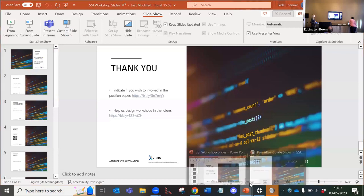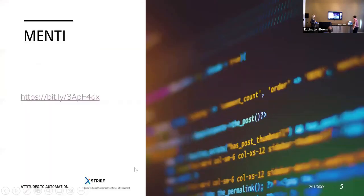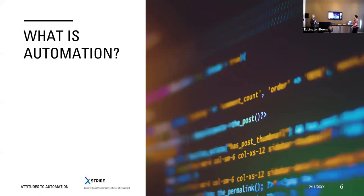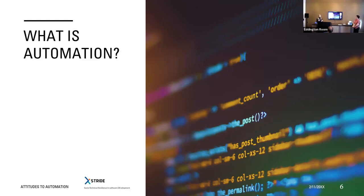So we'll proceed to Caroline talking about what automation is. If you want to put your name into the roll call of the notes document, that means we will contact you afterwards so we can involve you in reviewing the draft of the paper we'll put together after the workshop. Pop your name and email address in there if you'd like to be contacted.